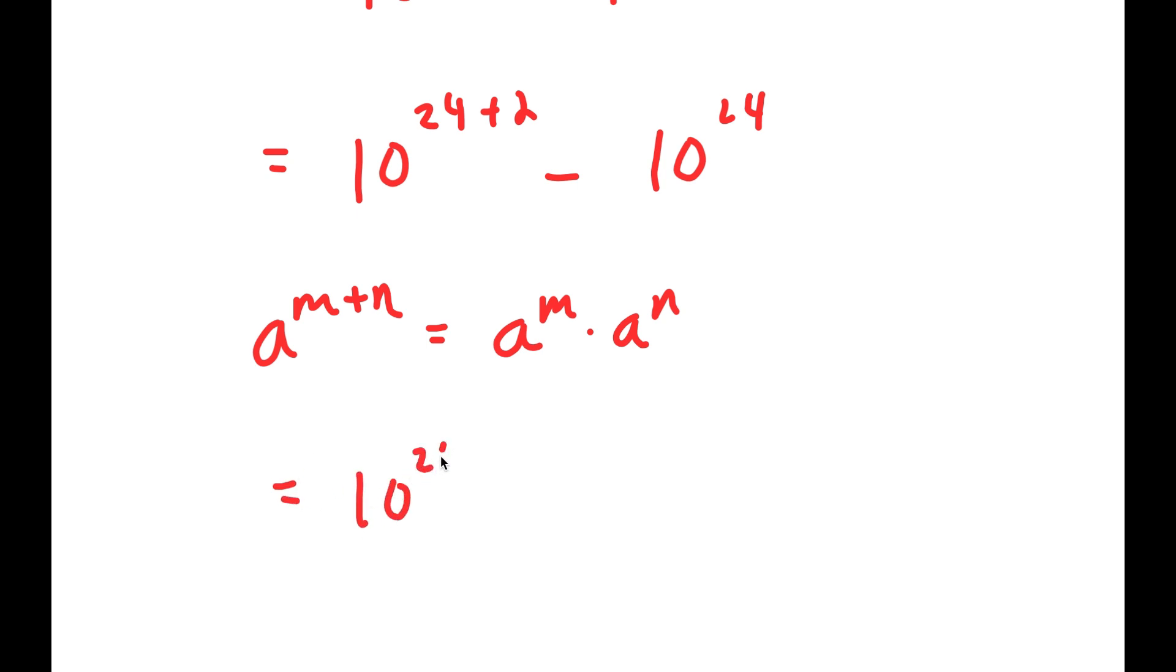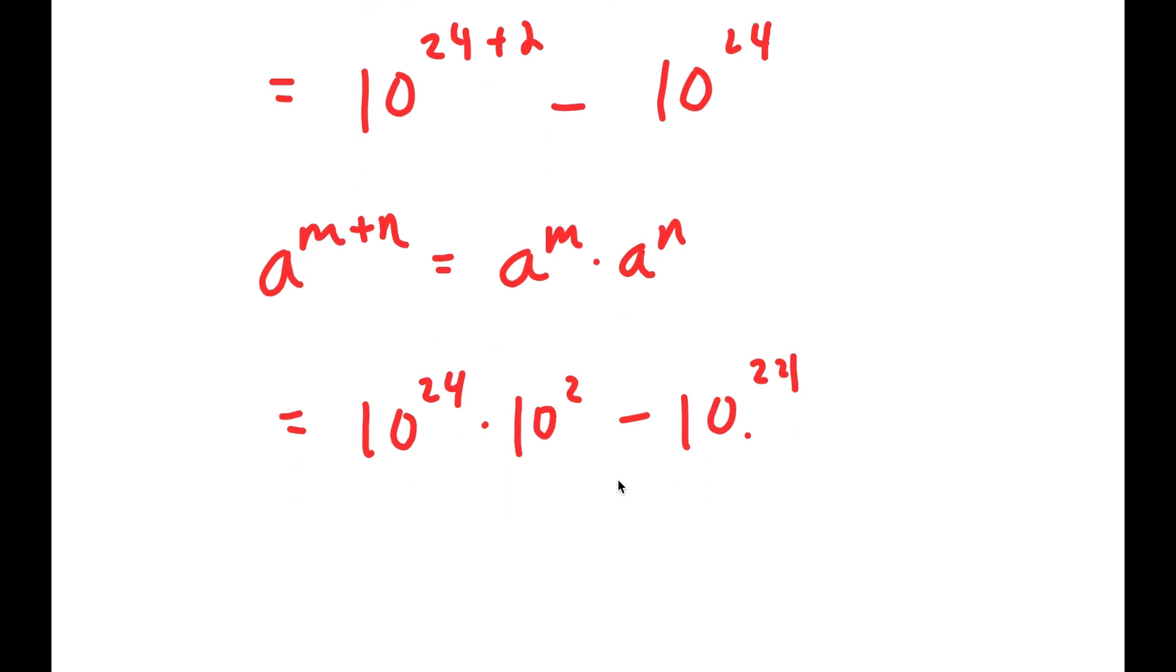So this turns into 10 to the power of 24 times 10 to the power of 2 minus 10 to the power of 24, which now I can factor out 10 to the power of 24.